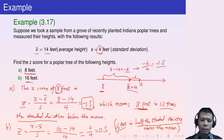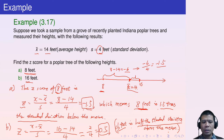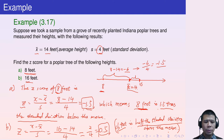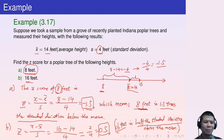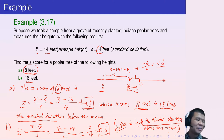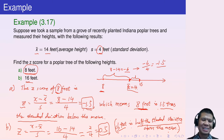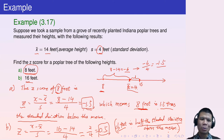That is the meaning of the z-score: the number of standard deviations that a value is away from the mean. Given the value of x, we can find its z-score. The z-score of 8 is negative 1.5 and the z-score of 16 is 0.5. Given the actual value of x, we use the formula to find the corresponding z-score.